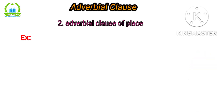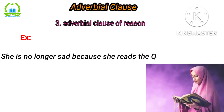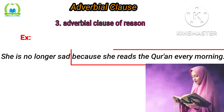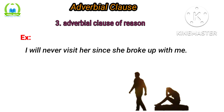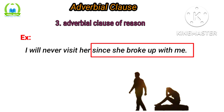The adverbial clause of reason tells us why an action is performed. Example: 'She is no longer sad because she reads the Quran every morning.' The reason she is not sad is that she reads the Quran every day. Another example: 'I will never visit her since she broke up with me.' The reason I will not visit her is she broke up with me — 'since she broke up with me' is the dependent clause.